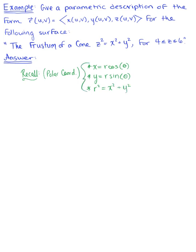And these three conversion formulas are where the radius, of course, is greater than or equal to 0, and theta is greater than or equal to 0, less than or equal to 2 pi.